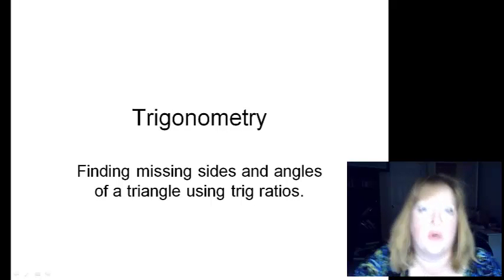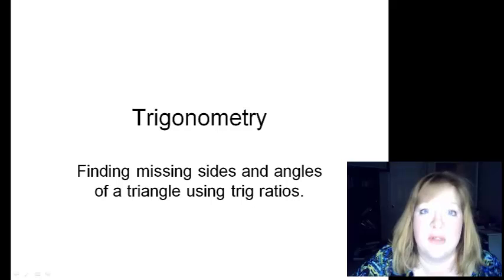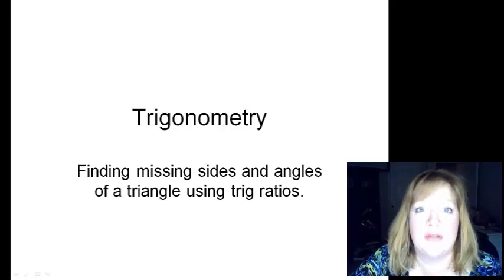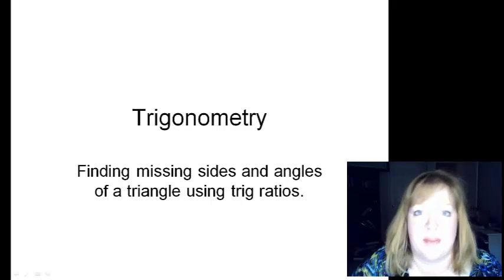So hopefully you know your SOH CAH TOA: sine is opposite over hypotenuse, cosine is adjacent over hypotenuse, and tangent is opposite over adjacent.